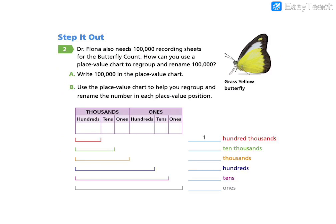We're going to go ahead and look at the step it out problem. Dr. Fiona also needs 100,000 recording sheets for the butterfly count. Now, how can you use a place value chart to regroup and rename 100,000? Write 100,000 in the place value chart. Go ahead and do that now. All right, so we have 100,000.